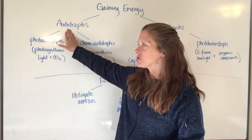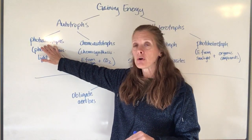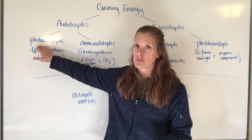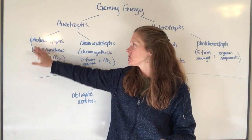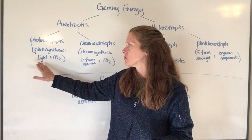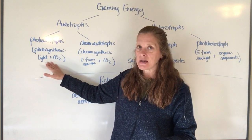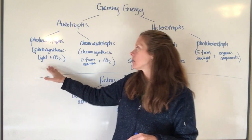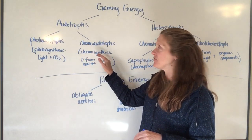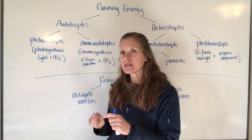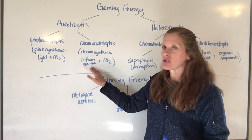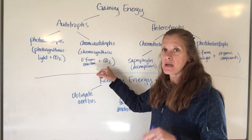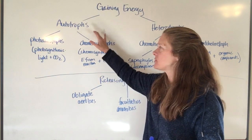Autotrophs can further be broken down into either photo autotrophs or chemo autotrophs. A photo autotroph is what we're most familiar with because plants are photo autotrophs — they do photosynthesis, using light energy from the sun and carbon dioxide to make the food they need to survive. Some bacteria, however, are chemo autotrophs and use chemosynthesis, getting energy from a chemical reaction and combining it with carbon dioxide to make the food they need. So those are two types of autotrophs.